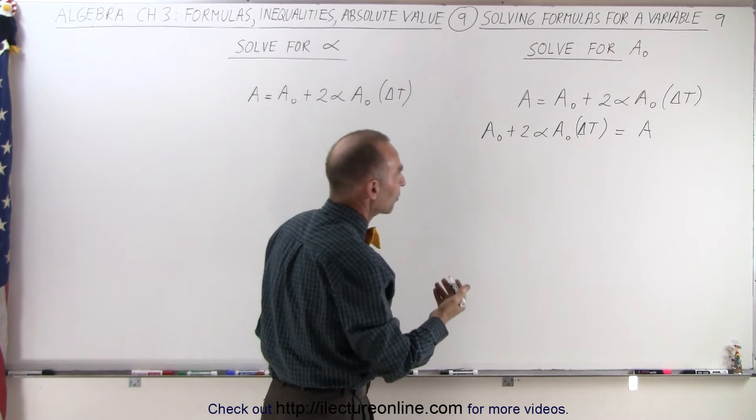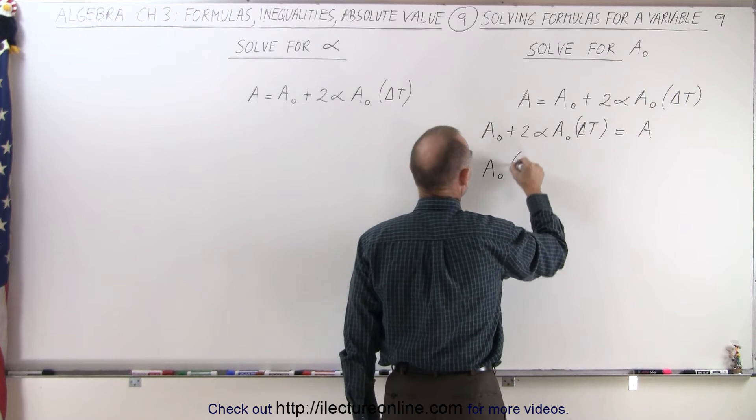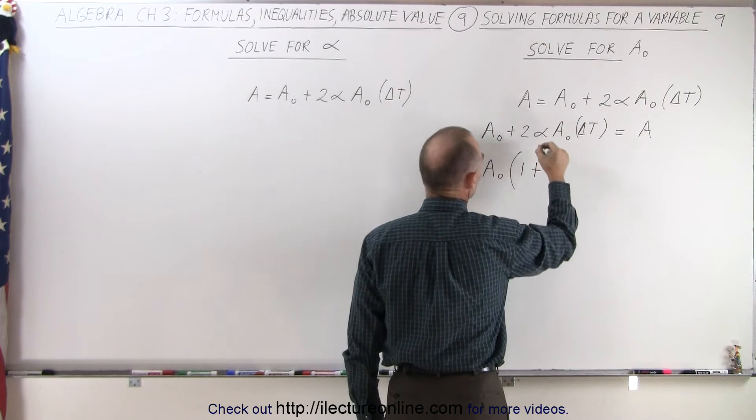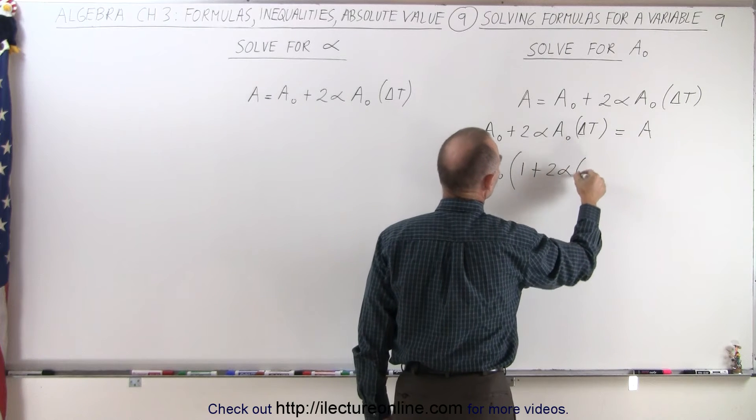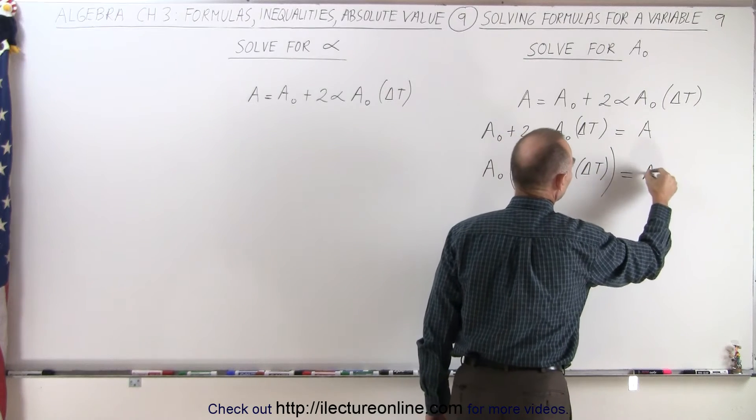At this point, I'm ready to factor out an A sub nought. So, I end up with A sub nought, and I have left over here simply the number 1 plus over here 2 alpha times delta T. On the right side, I still have an A.